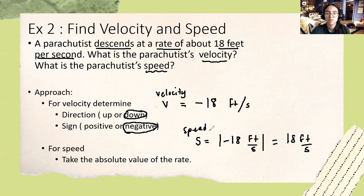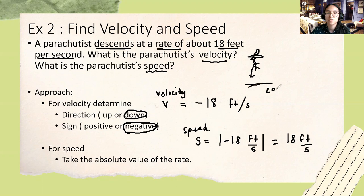We figured out the velocity direction is down because when someone drops from a plane, they're going down to earth. Because they're moving down, the sign of velocity is negative. And to find speed, we just take the absolute value of our velocity, which gives a positive number.